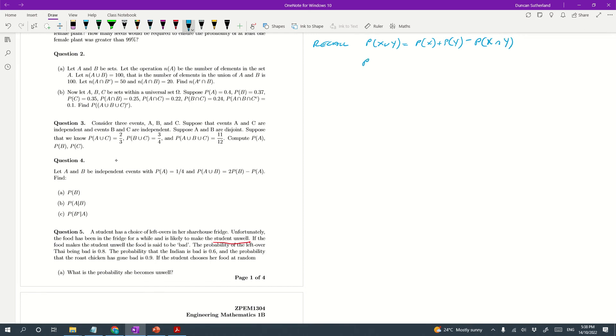We also have for independent events, X intersection Y is PX times PY. Or, PX intersection Y equals 0 if XY are mutually exclusive or disjoint. So we have two events that are disjoint, mutually exclusive, and we have the others are independent.